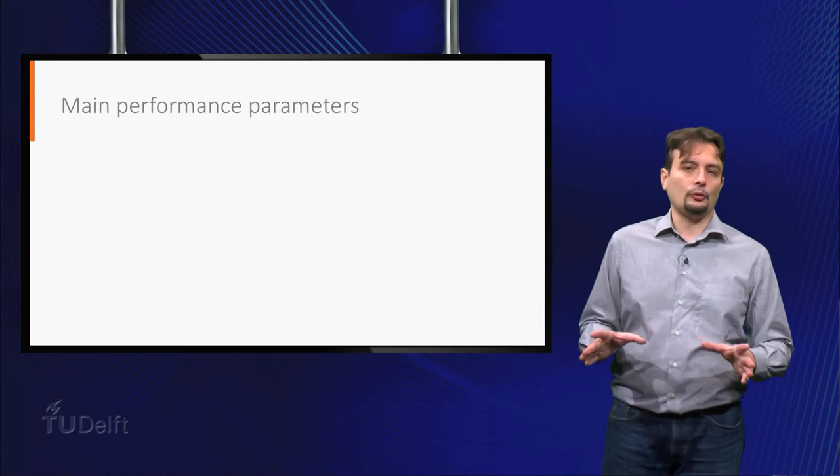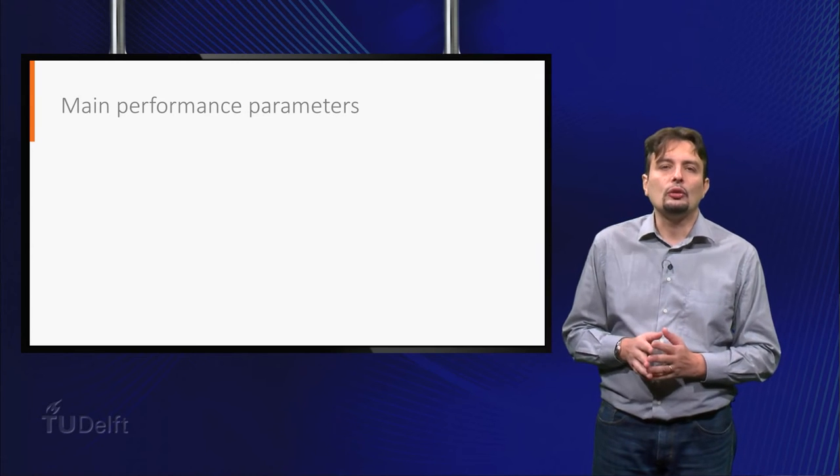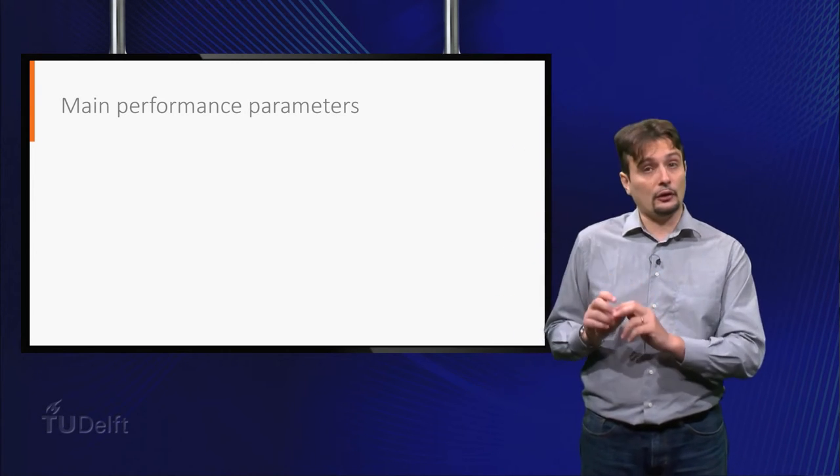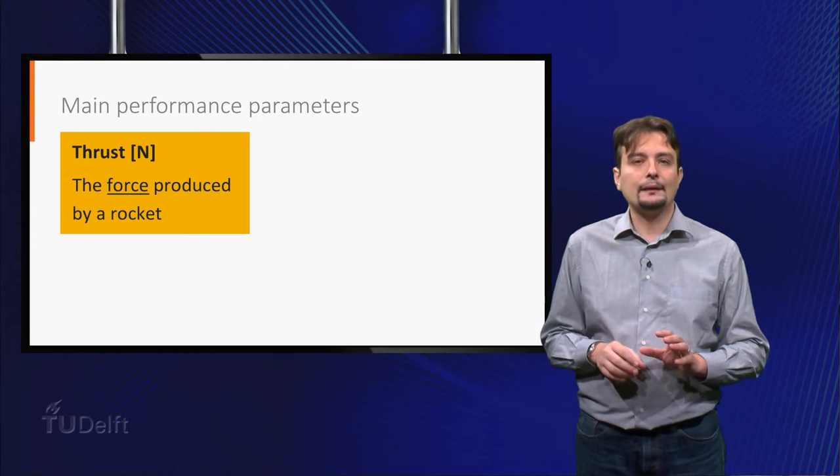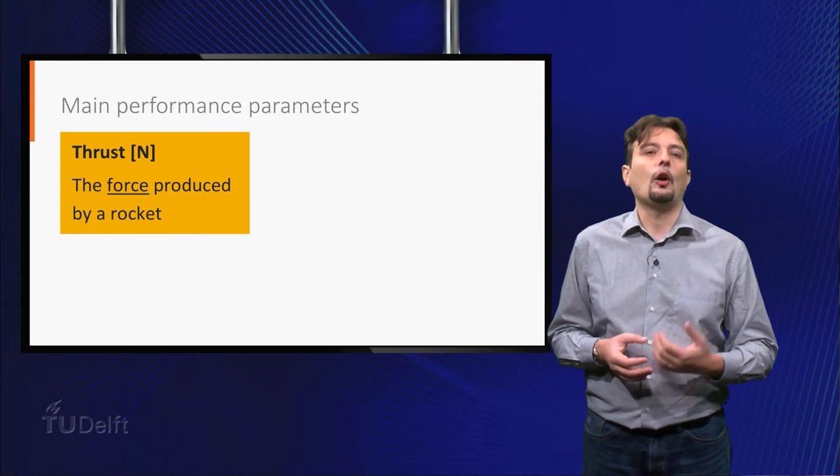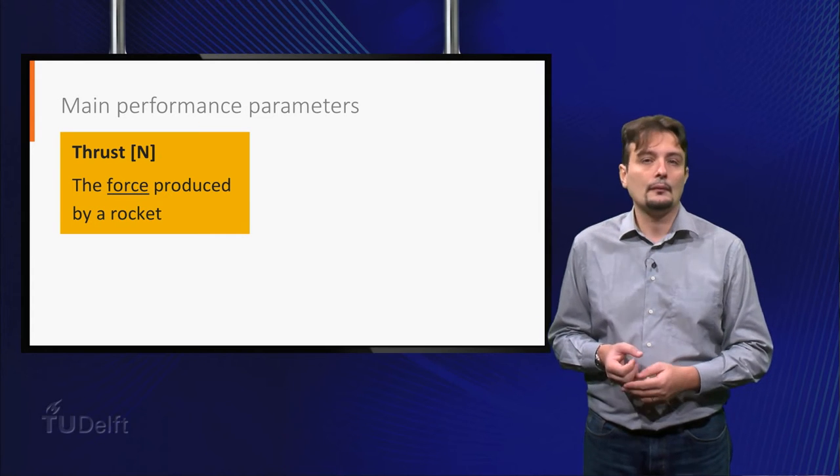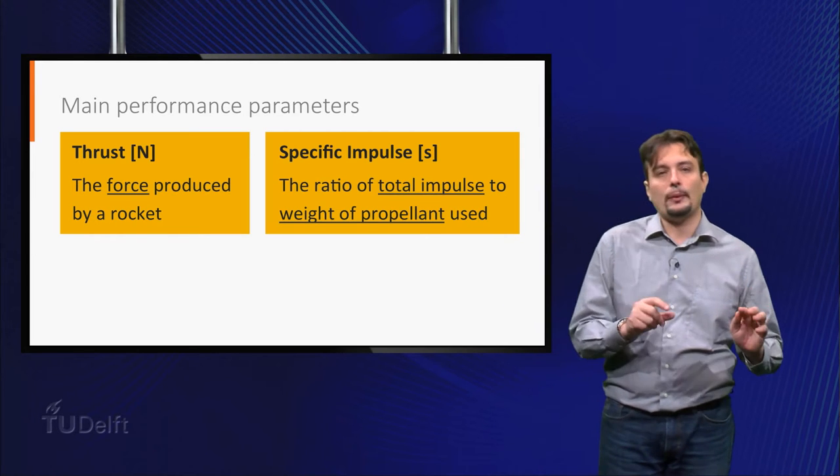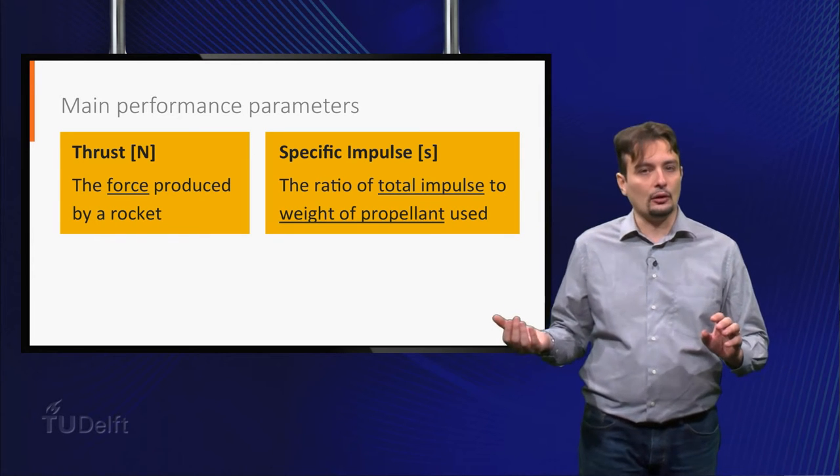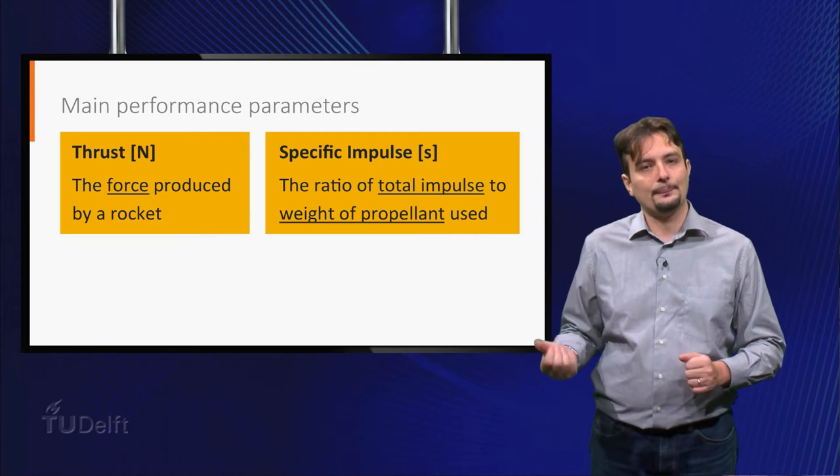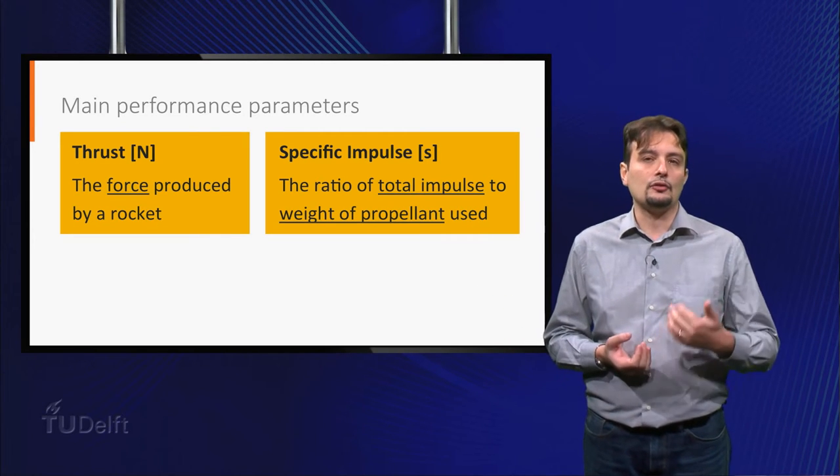From the introduction to spaceflight course, you should already be familiar with the most important performance parameters of a rocket. The thrust is simply the force produced by the rocket, and is obviously measured in Newton. The specific impulse is defined as the ratio of the total impulse generated by the rocket to the total weight of propellant used to generate it. It is typically measured in seconds.